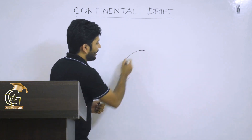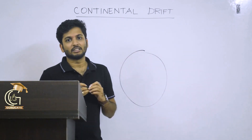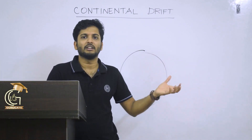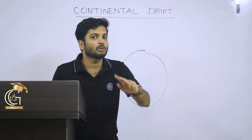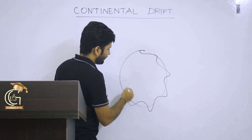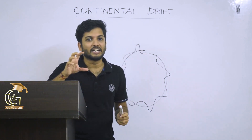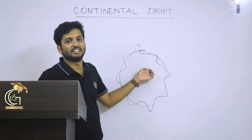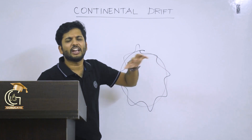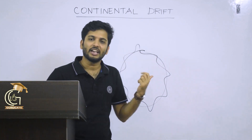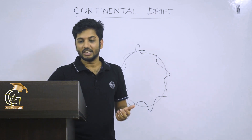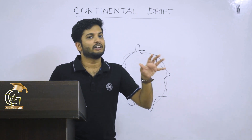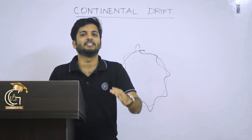According to Harold Jeffrey's thermal contraction theory, these features have been formed. Simply imagine: if this is our earth — a sphere — and if it contracts, what will it result in? Certain wrinkles will be created on this surface. What he said was that it is these wrinkles that form mountains, depressions, and various features. This was the thermal contraction theory put forward by Harold Jeffrey, which tried to prove that permanency of oceans and continents is a fact.